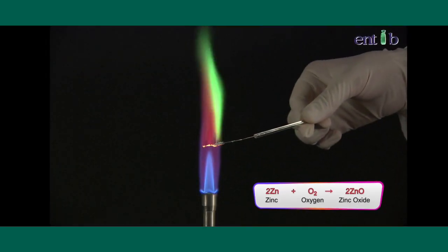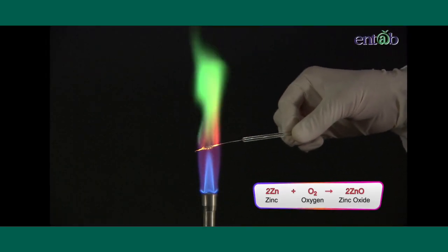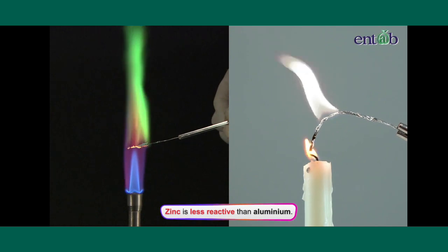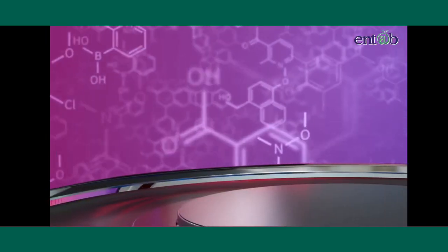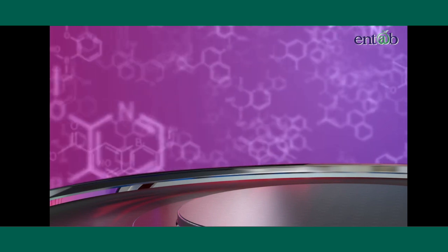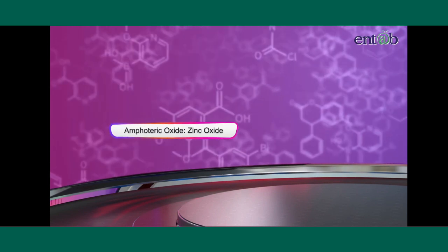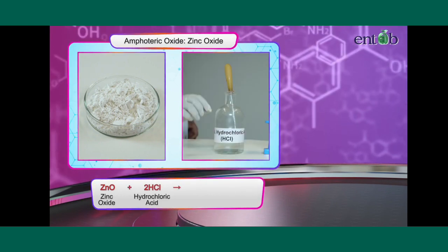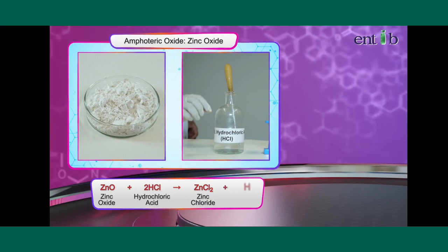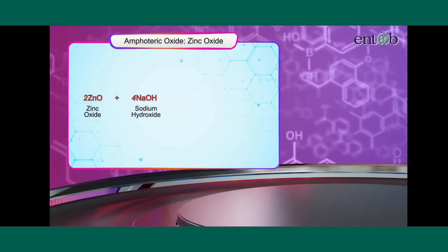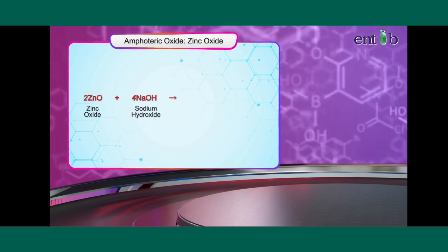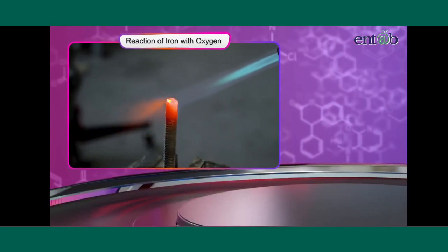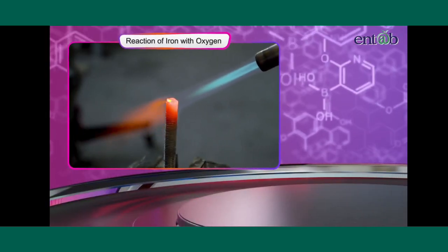Zinc metal burns in air only on strong heating with a bluish-green flame, making it a less reactive metal compared to aluminium. Just like aluminium, zinc also gives an amphoteric oxide. Zinc oxide reacts with hydrochloric acid to form zinc chloride and water, and with sodium hydroxide it forms sodium zincate and water.